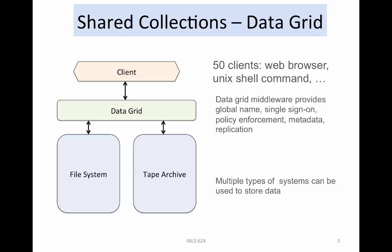A figure illustrating the role of DataGrid middleware is shown here. Instead of directly accessing files at a storage location, the client accesses the DataGrid. The DataGrid translates the requests made by the client to the protocol required by the storage system. This enables any client that is able to connect to the DataGrid to discover and retrieve files from any file systems, archives, object stores, websites, and legacy repositories that have unique access protocols.